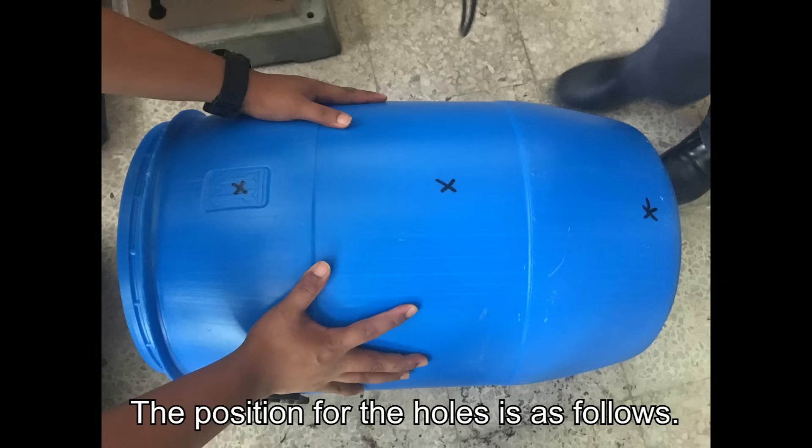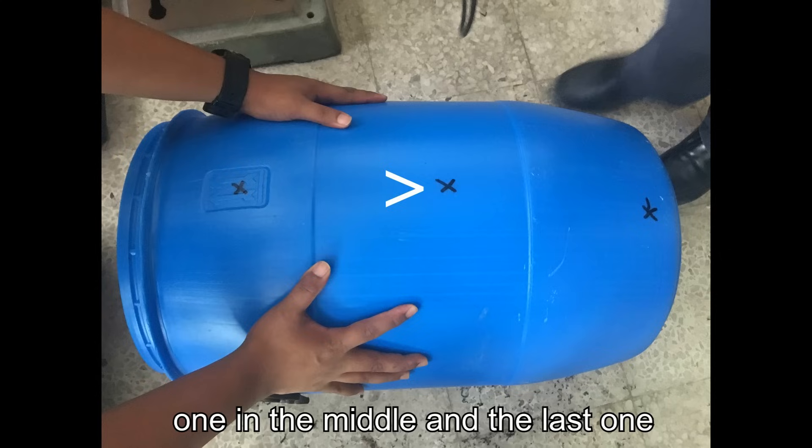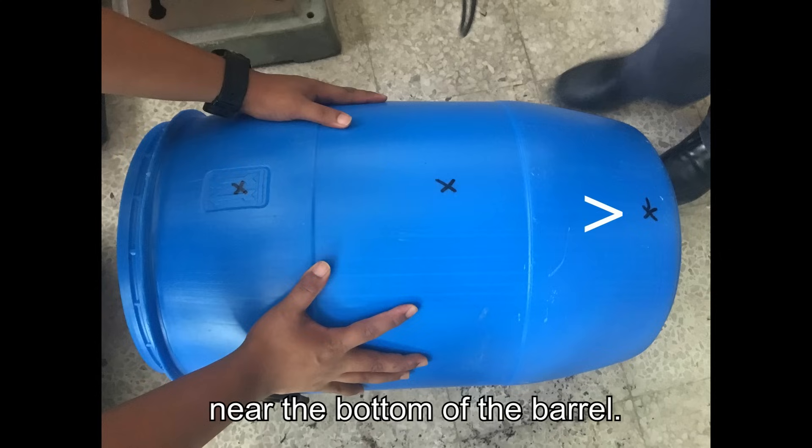The positions for the holes are as follows: one should be slightly below the lid, one should be in the middle, and the last one near the bottom of the barrel.